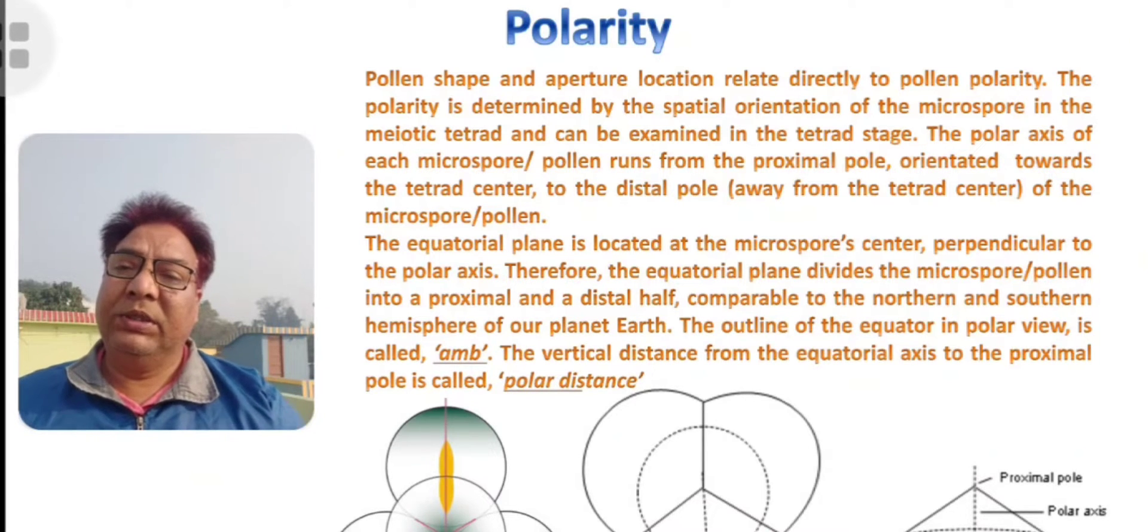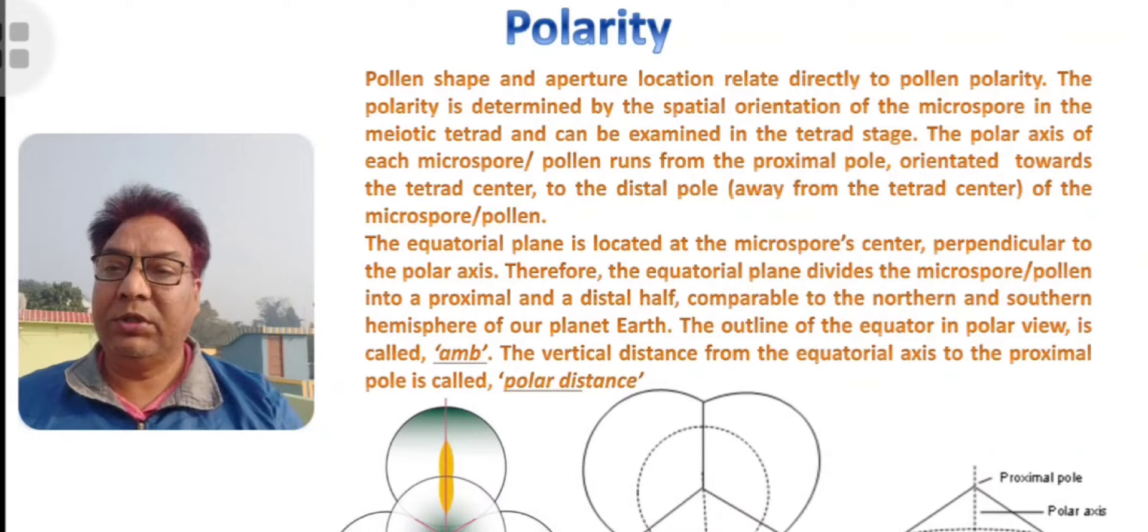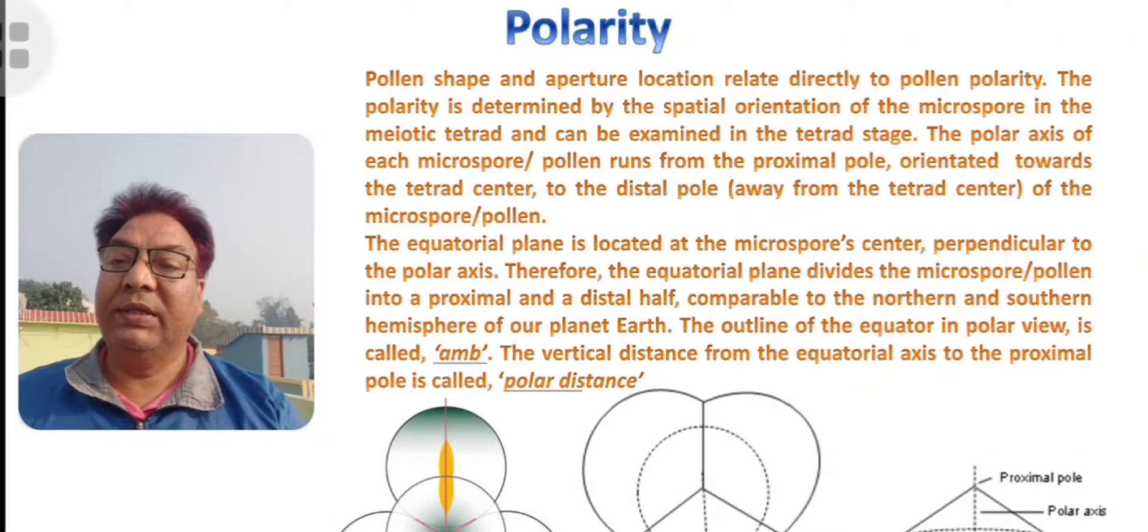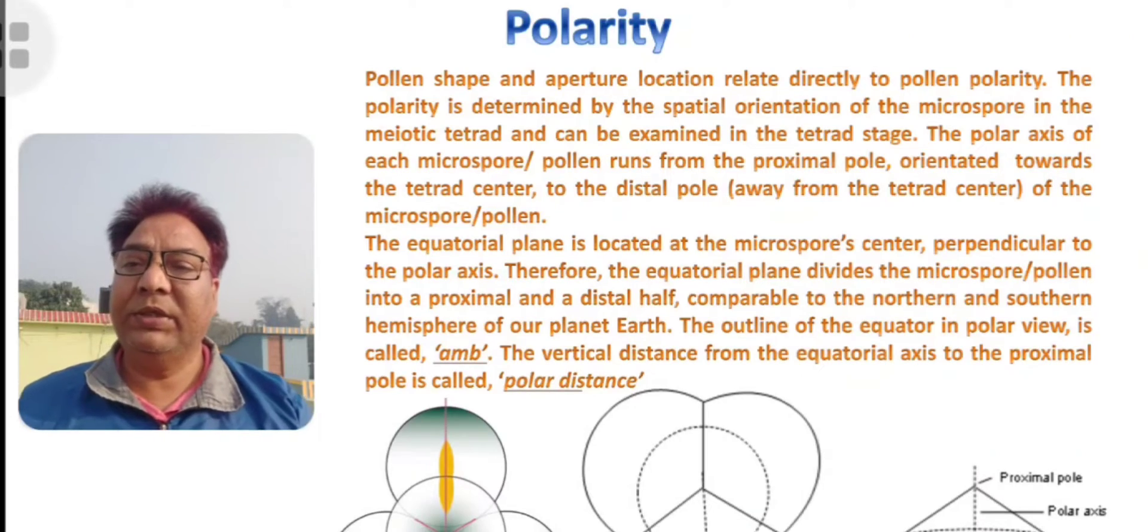Polarity is about the poles that each of these pollen grains which we are talking about have. There are two poles: proximal pole and distal pole.